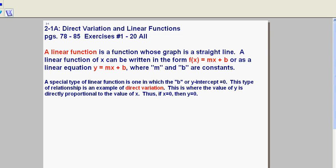A special type of linear function is one in which the b or y-intercept is equal to 0. This type of relationship is an example of direct variation. This is where the value of y is directly proportional to the value of x. Thus, if x is equal to 0, then y is equal to 0.